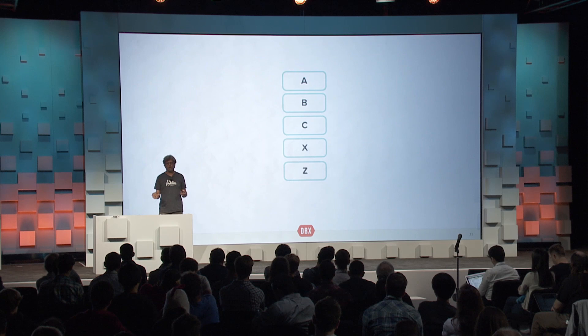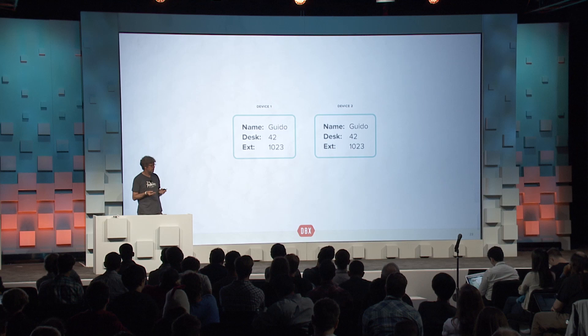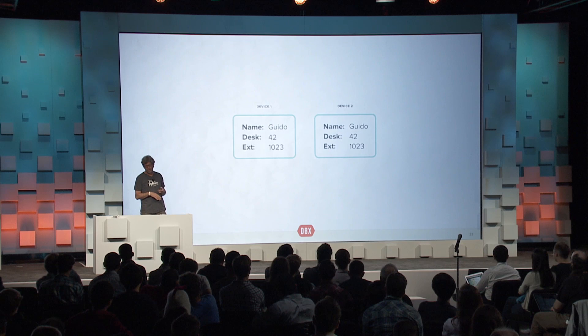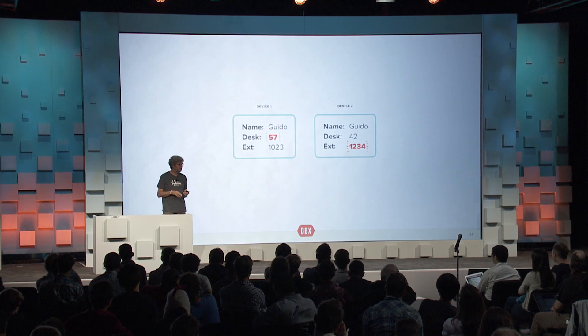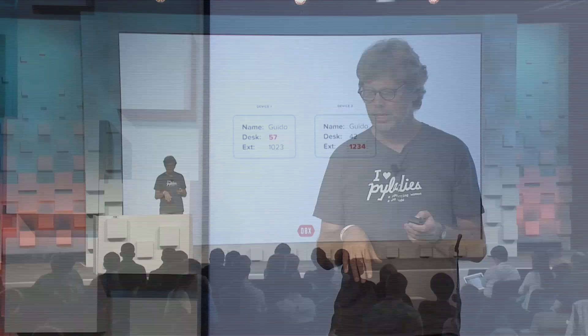Let's look at a slightly more complicated case. I have a wonderful desk number and phone extension at Dropbox. People at Dropbox like to move employees around, so I get moved to desk 57. And someone else thought my extension wasn't easy enough to remember, so they changed it. How does this get resolved? Because these actually affect different fields — even though they affect fields of the same record — it's actually not a conflict at all. The resolution is I move to desk 57 with the new extension.